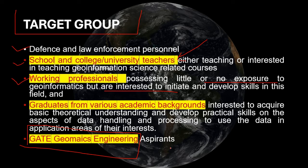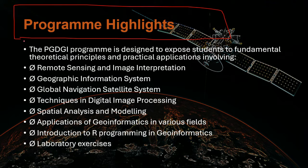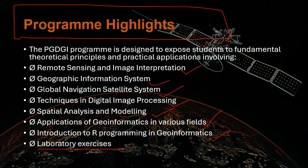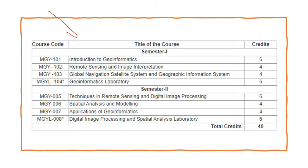The syllabus includes almost every topic of geoinformatics: remote sensing and image interpretation, GIS, Global Navigation Satellite System, techniques in digital image processing, spatial analysis and modeling, applications of geoinformatics, and an introduction to R programming. All laboratory exercises within the syllabus will also be covered. The course is structured across two semesters, each with four subjects.